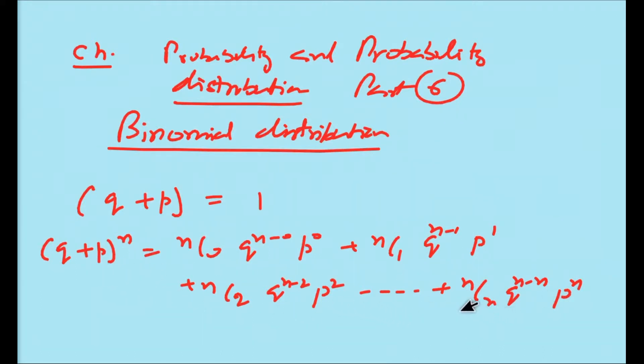Now I am coming to the binomial distribution. If we select r different things from n different things, we write this as nCr.